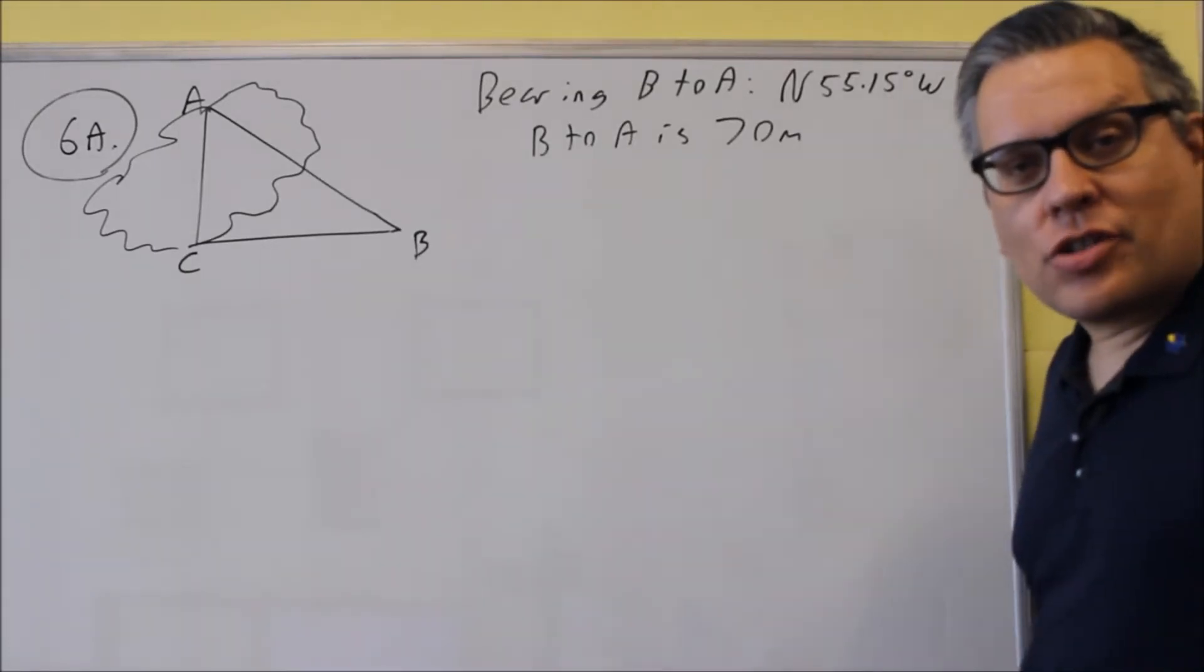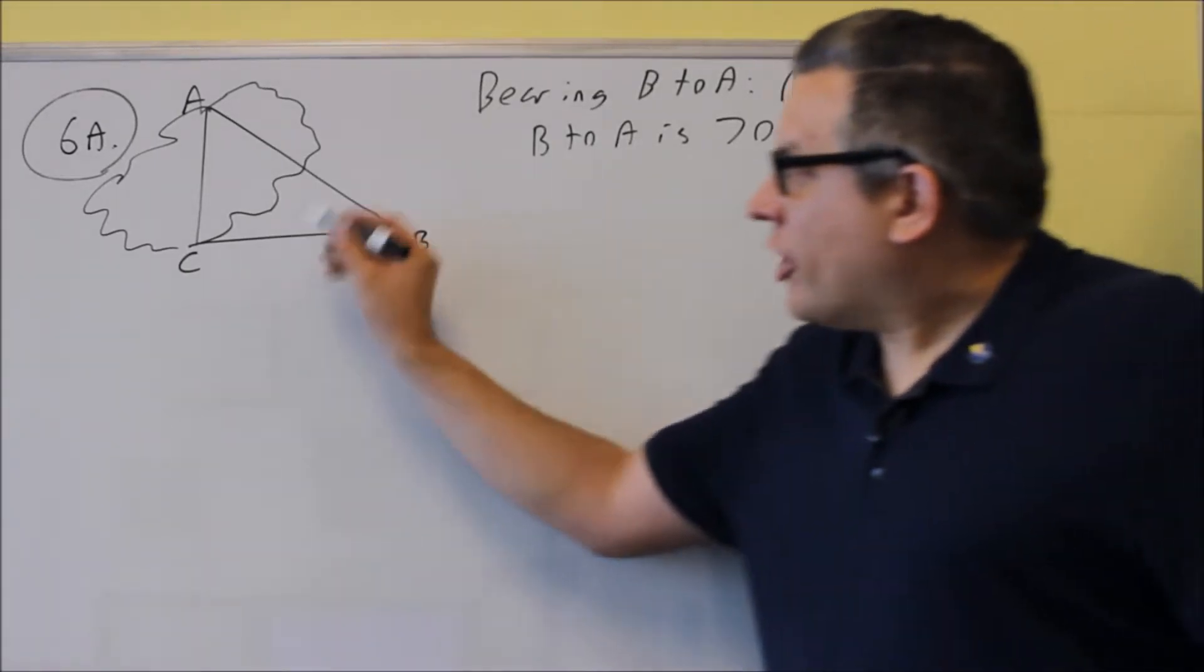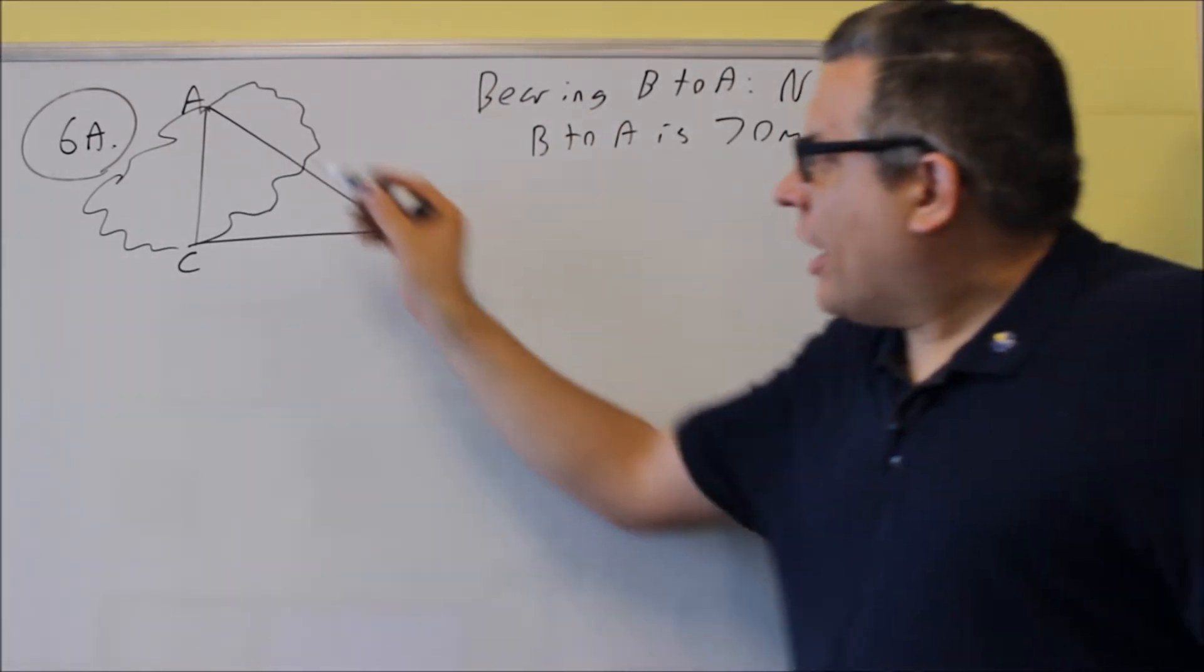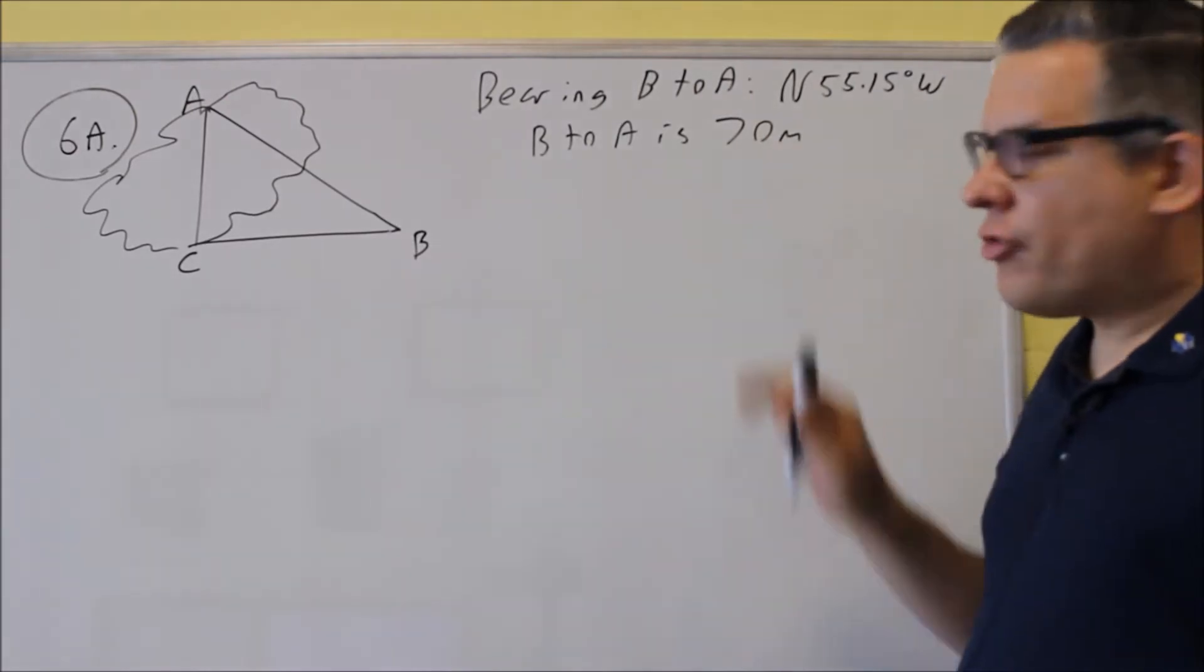For 6A we have another application of a right triangle. There's a lake that's given here. A to C is the distance across the lake. And we're given this triangle here. They give us some information.